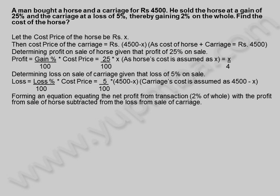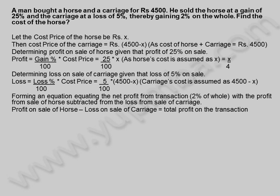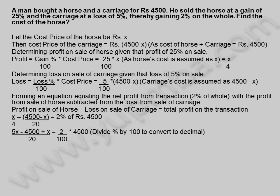Forming an equation equating the net profit from the transaction — 2% of whole — with the profit from sale of horse subtracted by the loss from sale of carriage. Profit on sale of horse minus loss on sale of carriage equals total profit on the transaction: X by 4 minus (4,500 minus X) by 20 equals 2% of Rs. 4,500. This gives (5X minus 4,500 plus X) divided by 20 equals 2 by 100 into 4,500. So 6X minus 4,500 equals 1,800, implying 6X equals 6,300.